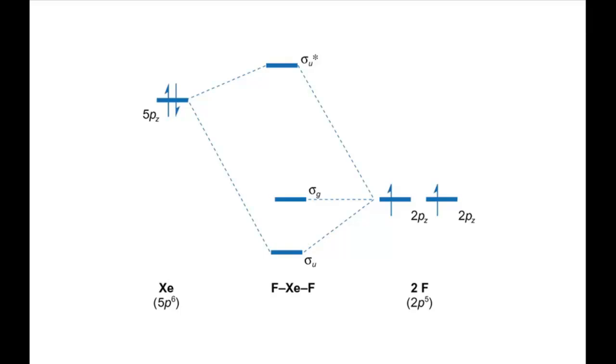Since there are two electrons in the xenon pz orbital and one each in the fluorine pz orbitals, there are four electrons to place into the molecular orbitals.